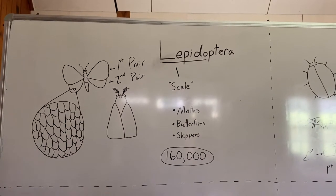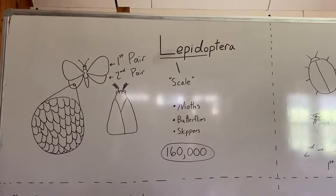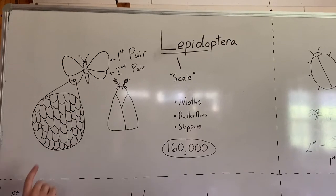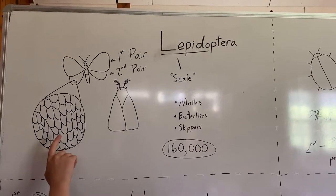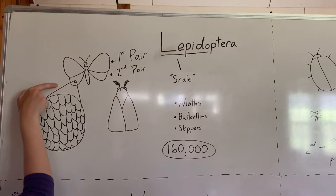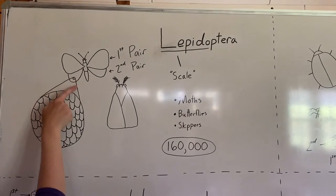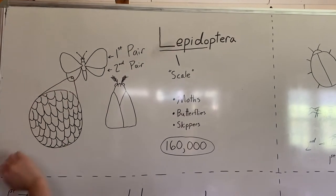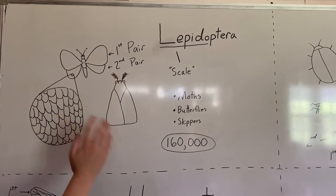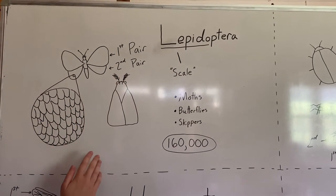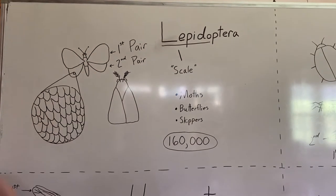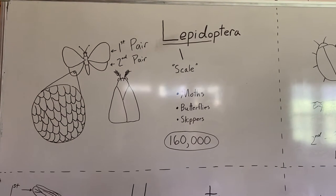It's a pretty large group, but there are a lot of insects out there. Butterflies and moths all have two pairs of wings and the three body segments. Some moths will have feathery antennae, but not all of them. Butterflies usually have little knobs at the end of their antennae.